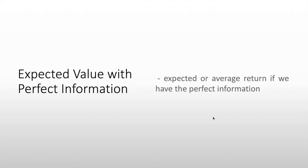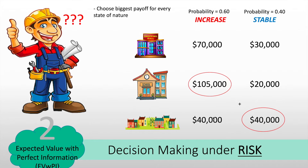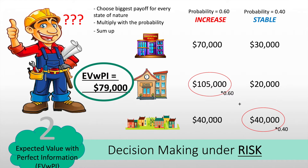Next, we have expected value with perfect information (EVWPI). It is the expected average return if we have perfect information — meaning we know all payoffs and probabilities and choose the best option. To solve for EVWPI, we choose the biggest payoff for every state of nature: $105,000 for increase and $40,000 for stable. Then we multiply by each probability: 0.60 times $105,000 plus $40,000 times 0.40. The expected value with perfect information is $79,000.